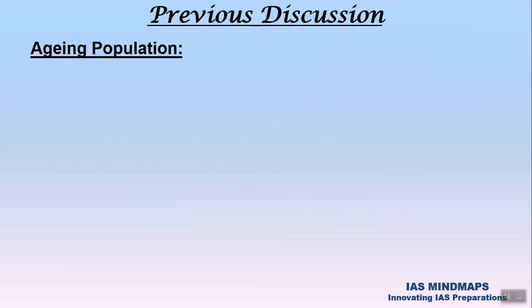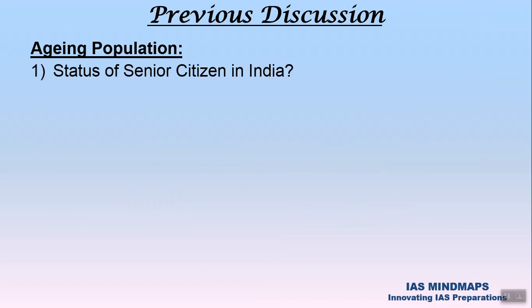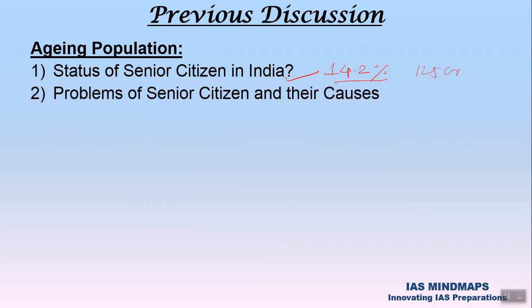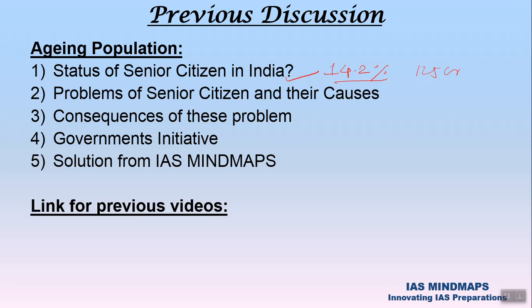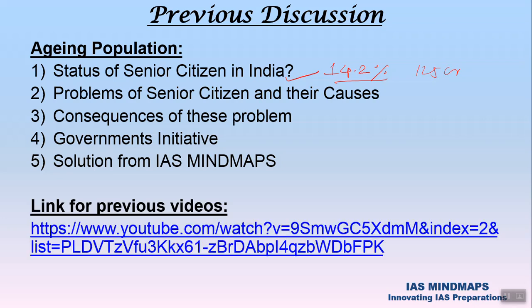In our previous discussion, we discussed one problem of population in India — that is aging population. We covered the status of senior citizens in India, noting that currently 14.2% of India's population of 125 crore are senior citizens. We also discussed their problems, causes, consequences, government initiatives, and solutions. Please visit our previous videos via the link in the description section.